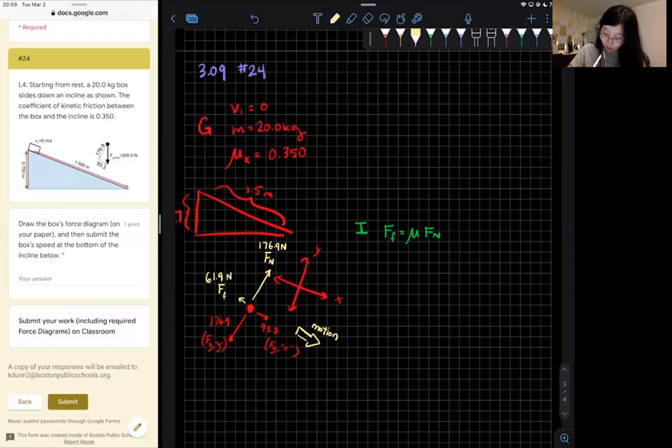This is a more complete force diagram. It has gravity broken up into two components given in the problem, and then from the scenario I figured out normal force as well as friction. There's no additional pushing happening in this problem.